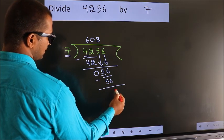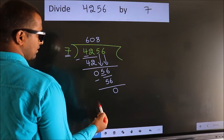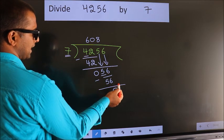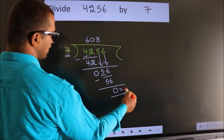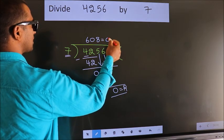Now we subtract. We get 0. No more numbers to bring down, so we stop here. This is our remainder. This is our quotient.